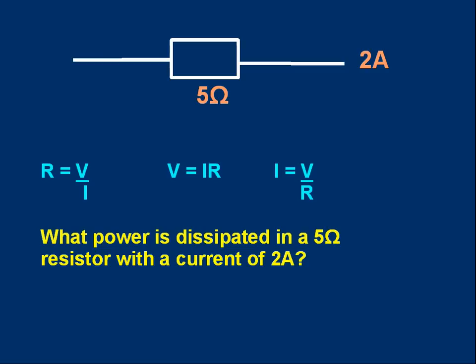And here's the question to start with. Take a look at this part of a circuit. We've got a 5 ohm resistor with 2 amps going through it. Can I remind you that resistance is voltage divided by current, V over I, which rearranged would be V equals IR, or I equals V over R. Don't forget power is voltage times current, so the question is what power is dissipated, that means turned to heat, in the 5 ohm resistor when a current of 2 amps flows.